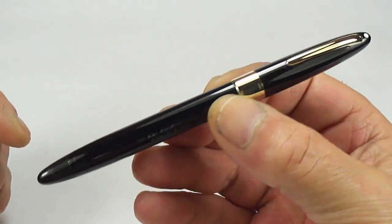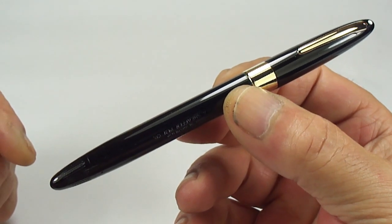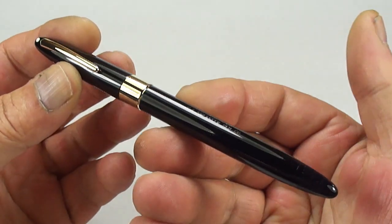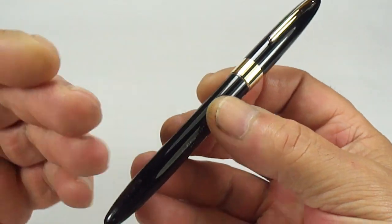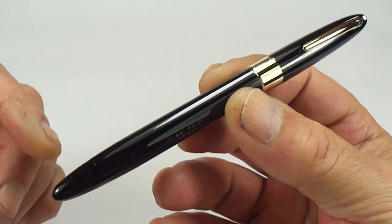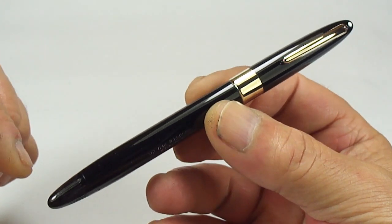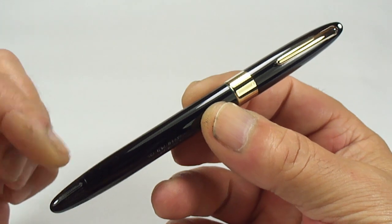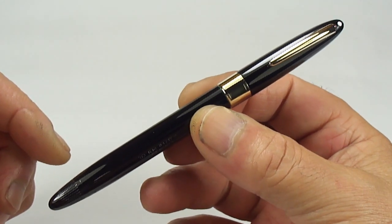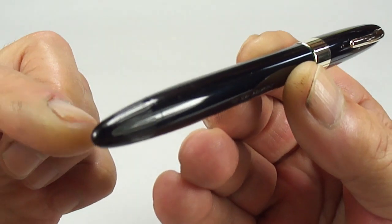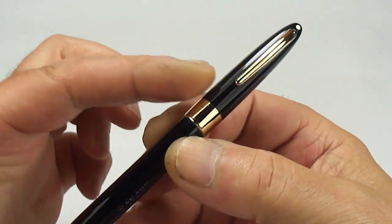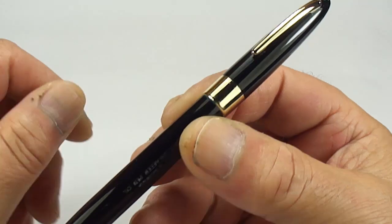What we have here for you is a Sheaffer Snorkel, and this one is the Statesman. As you people know, there's many different variations, so we're not going to go into the variations, just suffice to say this one is the Statesman. This one was made in Australia, and it's a snorkel. The date of the pen is from very early 1950s, maybe around about 1952.